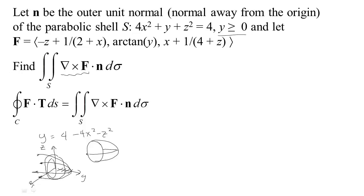Stokes' theorem says if you want to find the flux of the curl through the surface, you can just integrate around the boundary curve, which is a simple ellipse. So it might be worth it to trade setting up a parametrization for this surface and calculating your area conversion factor and normal — it might be worth it to just do the circulation integral instead.